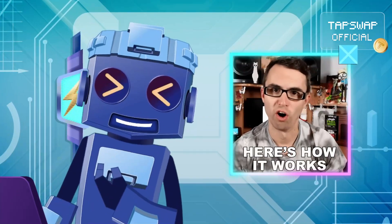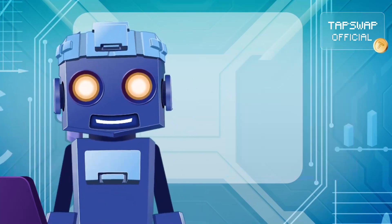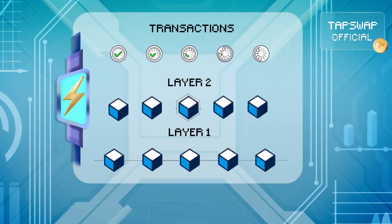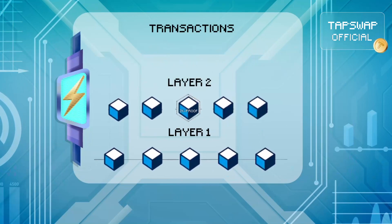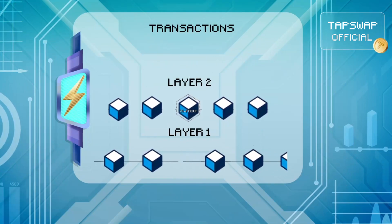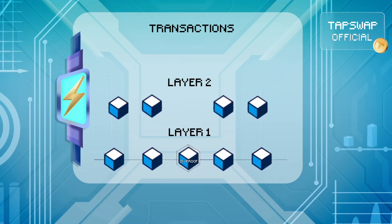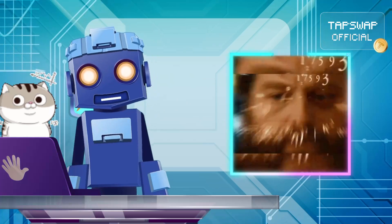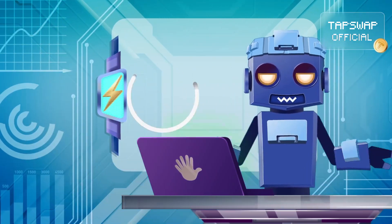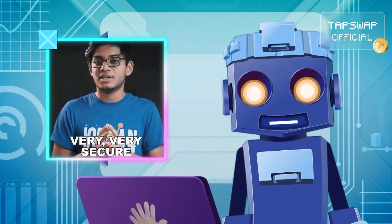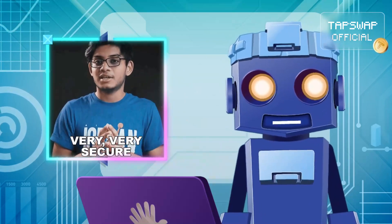Let's decode how ZK Rollups work in general. First, they bundle and process transactions off-chain. The results of these transactions are then condensed into a single batch and sent back to the main blockchain along with a zero-knowledge proof. This proof mathematically verifies that the transactions in the batch were processed correctly, without revealing any sensitive details about the transactions themselves.